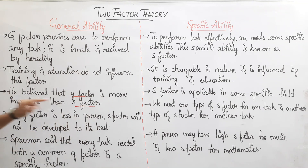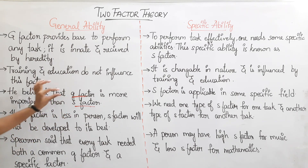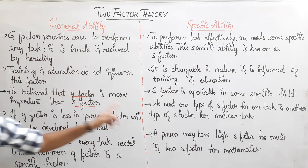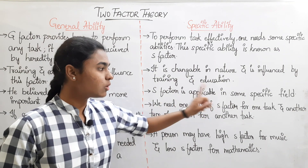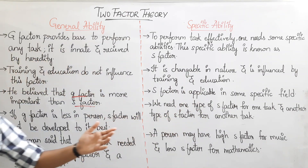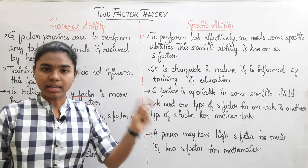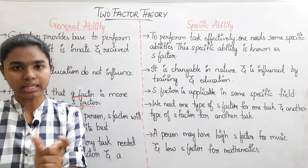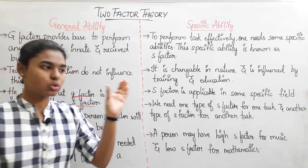Charles Spearman said the G-factor is very important relative to the S-factor. We need one type of S-factor for one task and another type for a different task. For instance, we have a specific ability for mathematics and a different one for swimming.